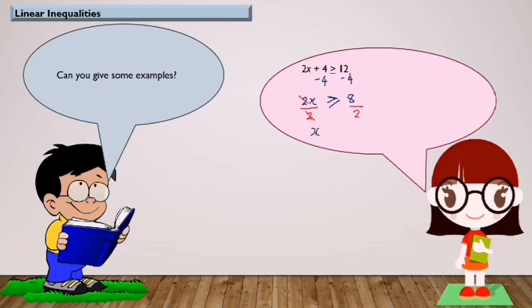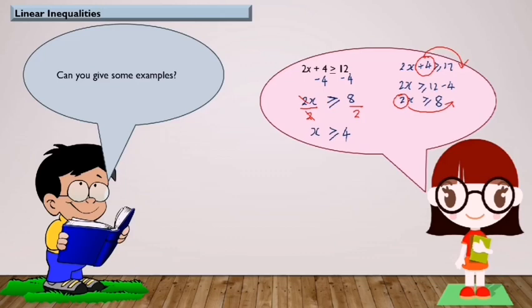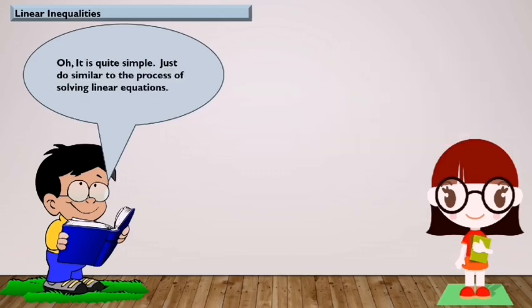So we can cancel the 2s, and the answer is s greater than or equal to 4. Another method: when we move plus 4 to the right hand side, the opposite of plus is minus, giving 2s greater than or equal to 12 minus 4, which equals 8. The opposite of multiply is divide, so s greater than or equal to 4. It looks quite simple — it is very similar to the process of solving linear equations.